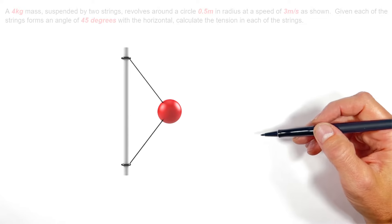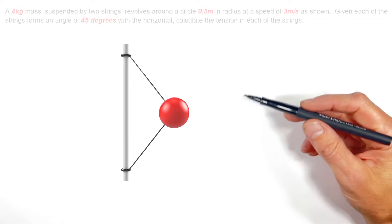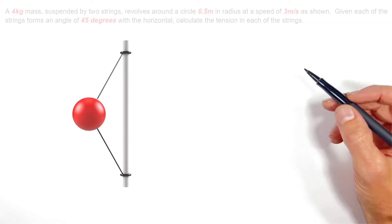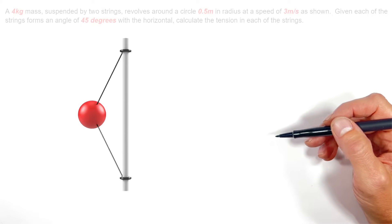Alright YouTube, today we're taking a look at a ball which is connected by two strings to a rod and the ball is spinning or swinging around that rod in a horizontal circle.